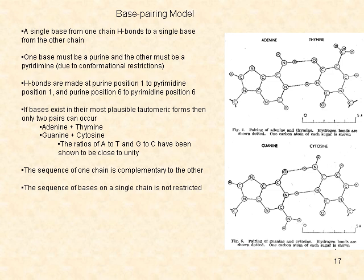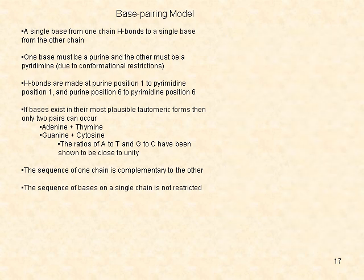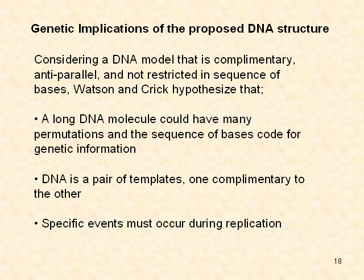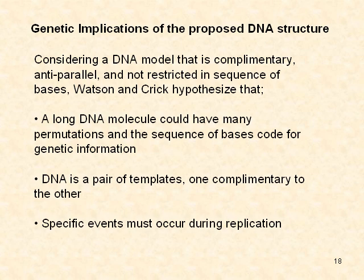According to this model, the sequence of one chain is complementary to the sequence of the other; however, the sequence of bases on a single chain is not restricted. Considering a DNA model that is complementary, antiparallel, and unrestricted in base sequence, Watson and Crick hypothesized that a long DNA molecule could have many permutations, and that the sequence of bases codes for genetic information. DNA is thus a pair of templates, one complementary to the other.